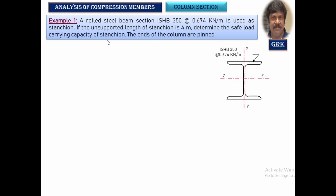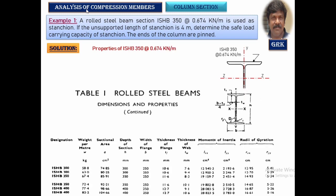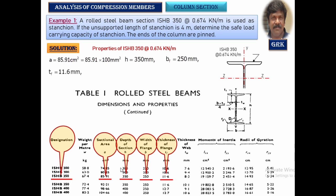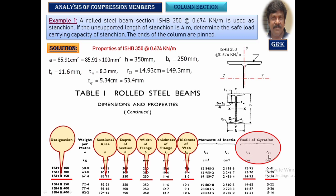Looking at the properties of ISHB 350 at 0.674 kilo Newton per meter from the steel table: the area of the section is 85.91 cm², depth of the section is 350 mm, width of the section is 250 mm, thickness of the flange is 11.6 mm, thickness of the web is 8.3 mm. We also note down the radius of gyration about both the ZZ axis and the YY axis.